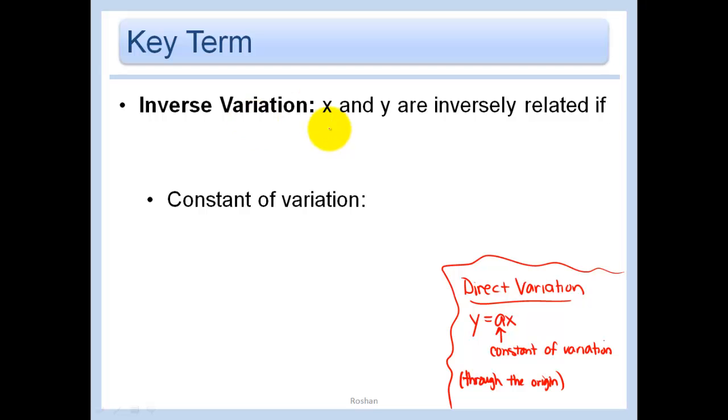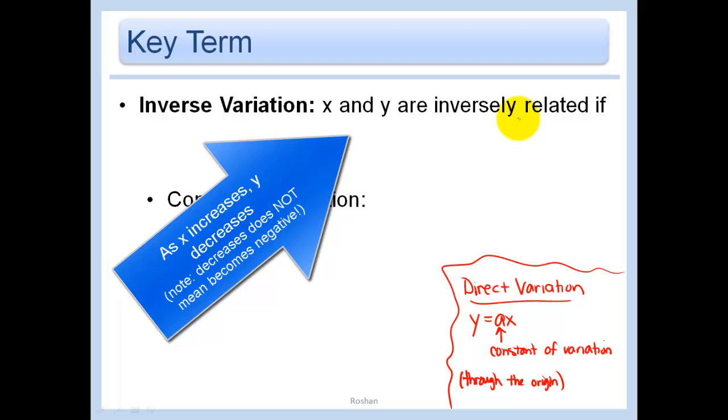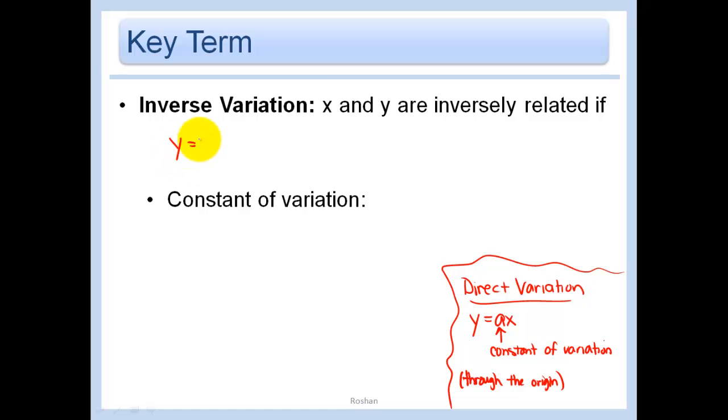Inverse variation means that X and Y are inversely related. In other words, if X goes up, Y actually goes down, and vice versa. So that would be of the form Y equals A over X, instead of Y equals AX.